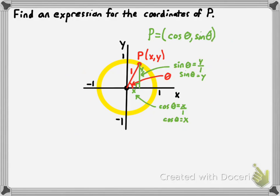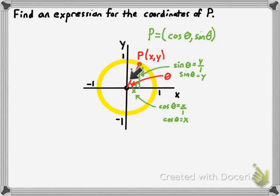Here's something you need to know: whenever we're dealing with the unit circle, the x-coordinate for a point where a standard position angle intersects the unit circle is always equal to the cosine of that angle, and the y-coordinate is always equal to the sine of that angle. This all comes from the fact that the radius is one. Cosine goes with x-coordinates; sine goes with y-coordinates — that's something you need to have memorized.